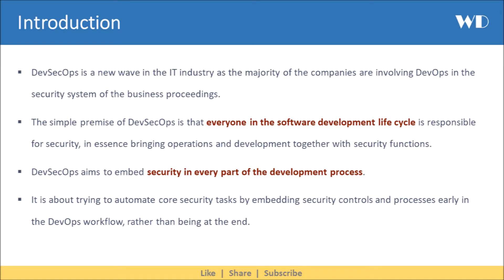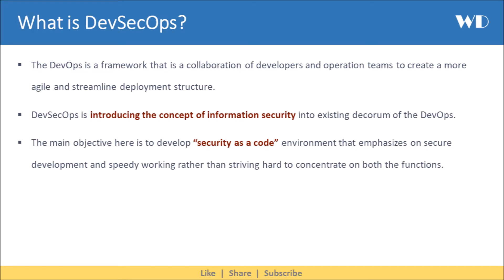It is about trying to automate core security tasks by embedding security controls and processes early in the DevOps workflow, rather than being at the end. DevOps is a framework that is a collaboration of developers and operation teams to create a more agile and streamlined deployment structure. DevSecOps introduces the concept of information security into the existing decorum of DevOps.